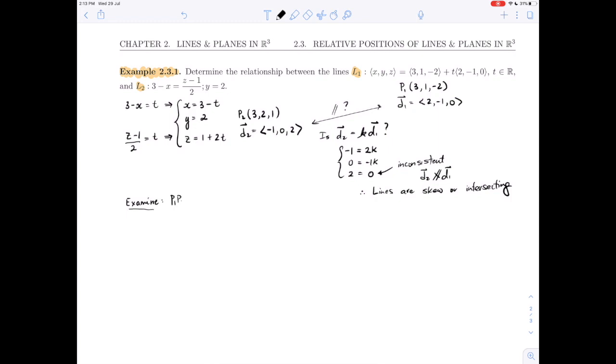So p1, p2 dotted with d1 crossed with d2. So p1, p2, we need to calculate that quickly. And that is just, we'll do the delta method. We'll subtract the components. So p1 minus p2 here. So 3 minus 3 gives me 0. 1 minus 2 is minus 1. And minus 2 minus 1 is minus 3.